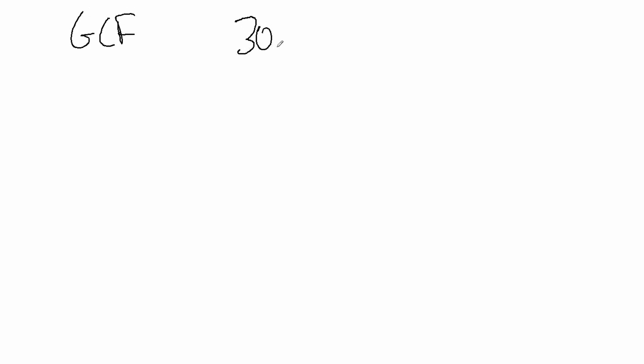Here's another example of finding the greatest common factor. This time we're going to do it with three numbers — we're going to find the GCF of 30, 78, and 112. So just like before, we're going to use factor trees.